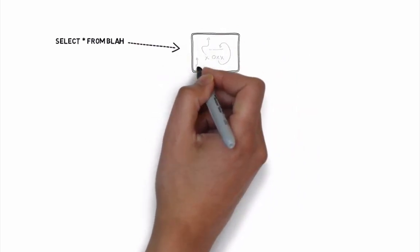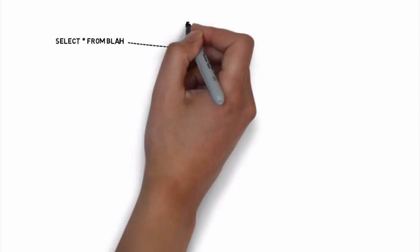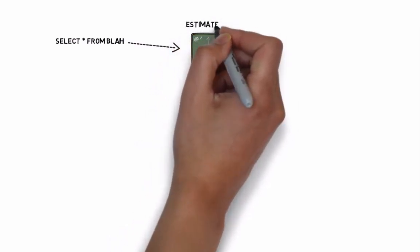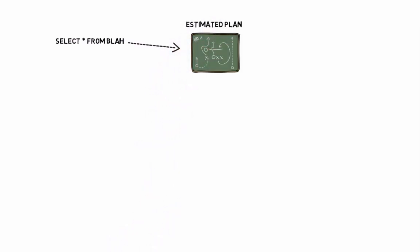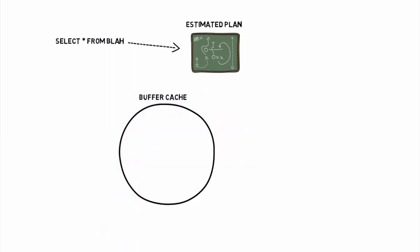As they are created, plans are stored in a section of memory called the plan cache. When a query is submitted to the server, an estimated execution plan is created by the optimizer. Once that plan is created and before it gets passed to the storage engine, the optimizer compares the estimated plan to the actual plan that already exists in the plan cache.